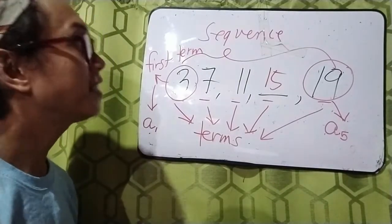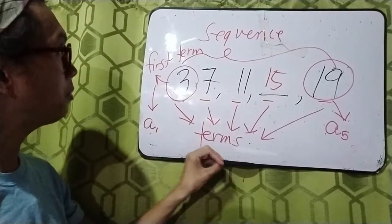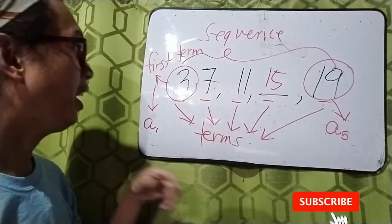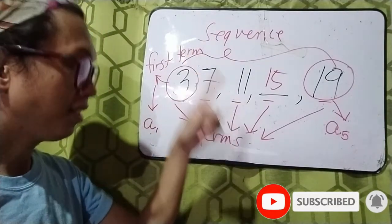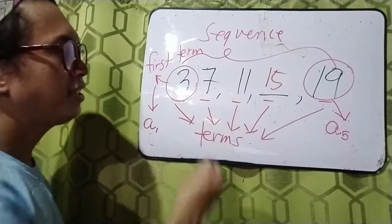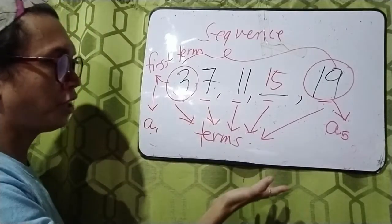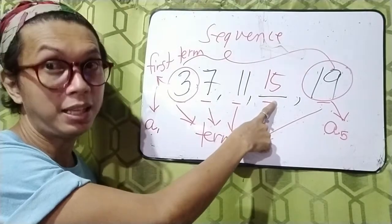So, that's it. Now, we have the sequence, we have the terms, we have the first term and the second term to identify the numbers in a sequence. And aside from that, since a while ago in our introduction, number 15 is missing, right?